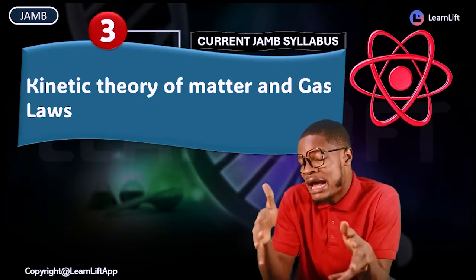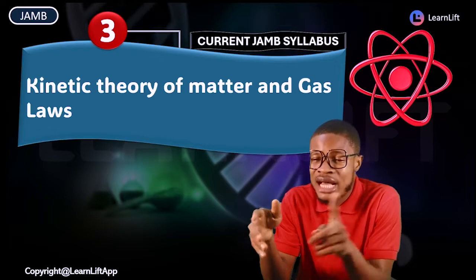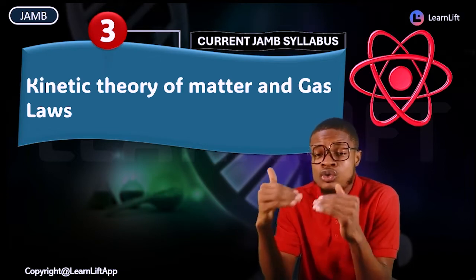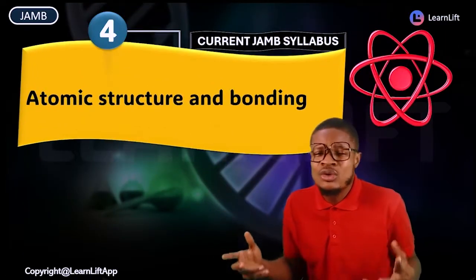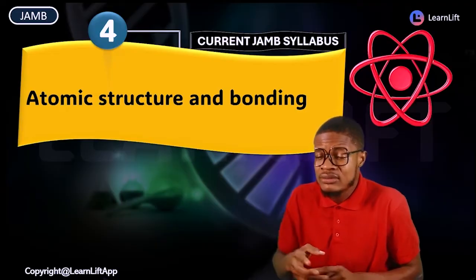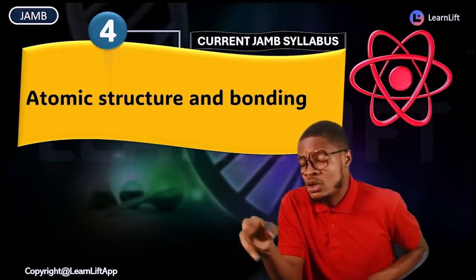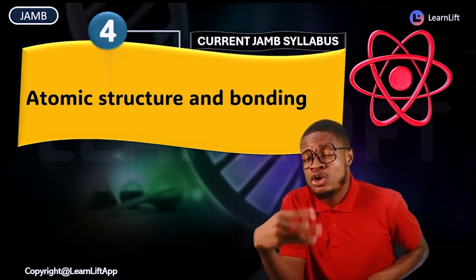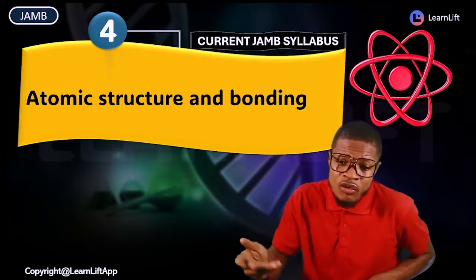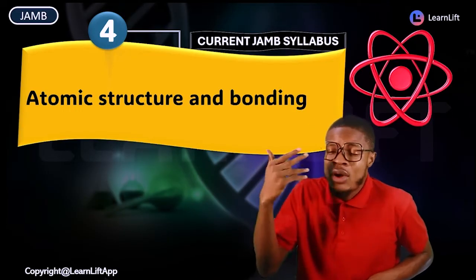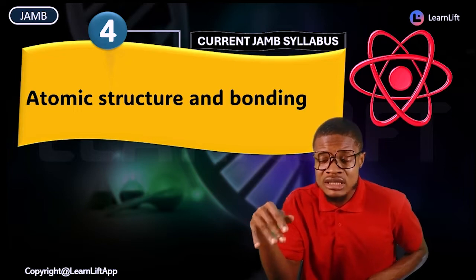In kinetic theory of matter, we first treat kinetic theory, look at Avogadro's postulate, and then go to gas laws. We will be looking at Boyle's law, Charles's law, Avogadro's law, and Gay-Lussac's law — all of those laws one after the other. After that, we accelerate into number four: atomic structure and bonding. We cover fundamental atomic particles — electrons, protons, neutrons — the works of J.J. Thomson, Rutherford, and then move into bonding: ionic bond, covalent bond, metallic bond, and Van der Waals forces.